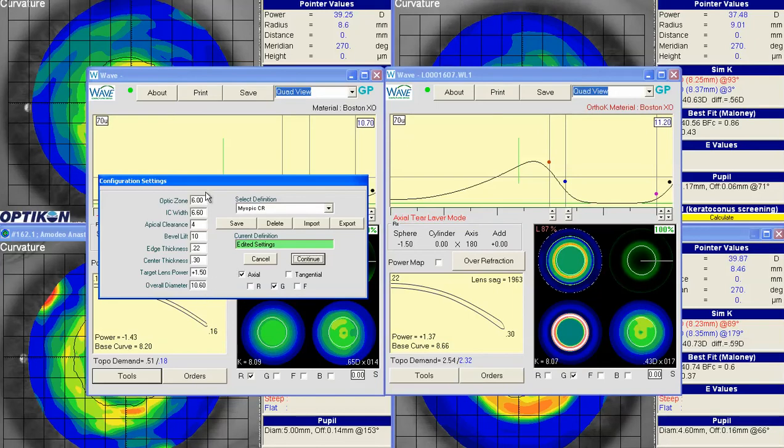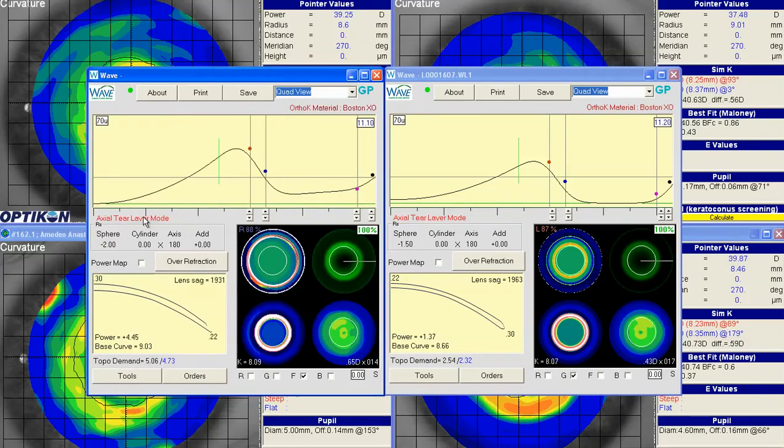Except our target lens power in this case will be around 2.5. And then you can also select your freeform if you want to. And we're going to go with the original diameter of 11.1. So if we hit continue.